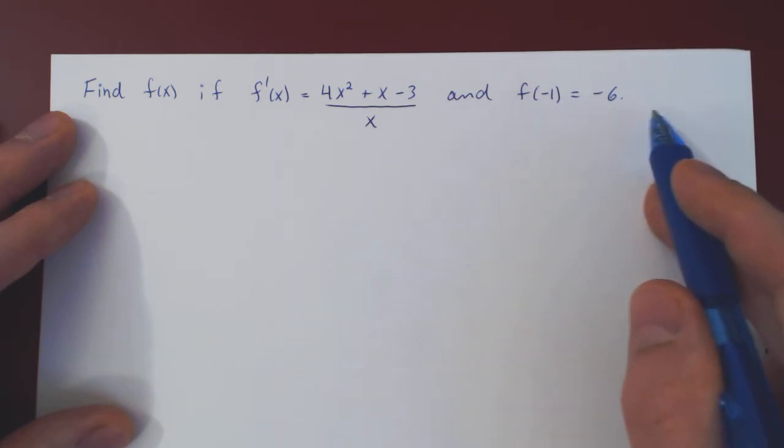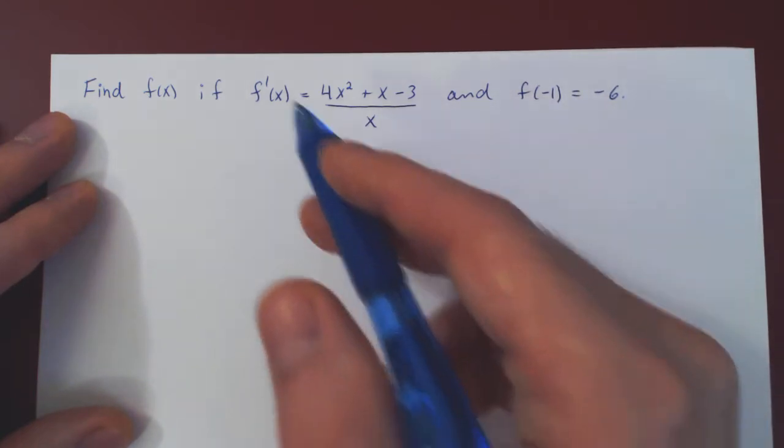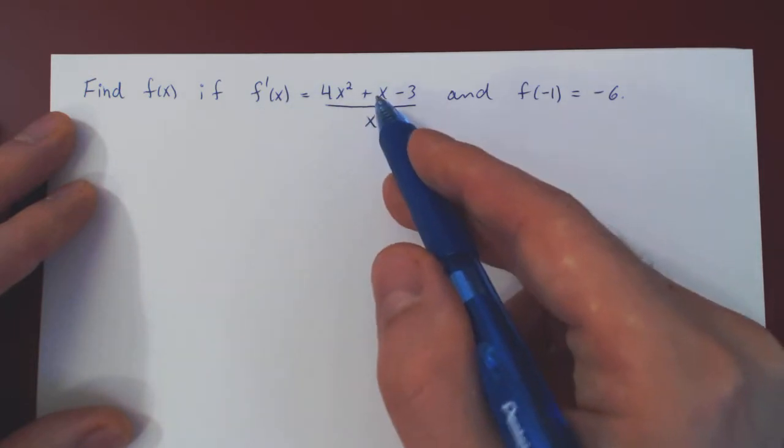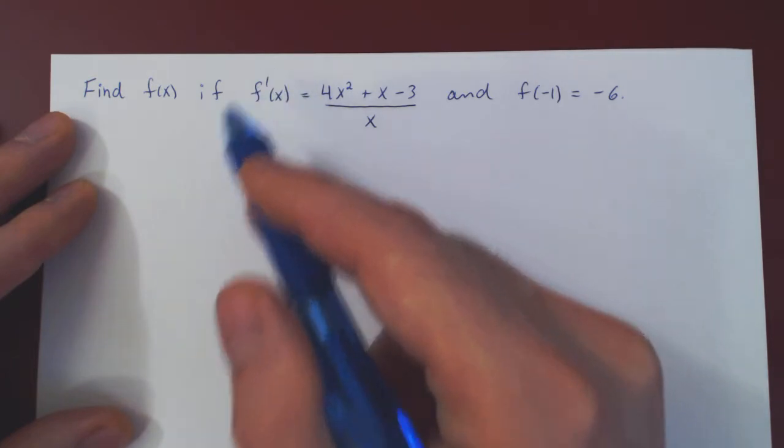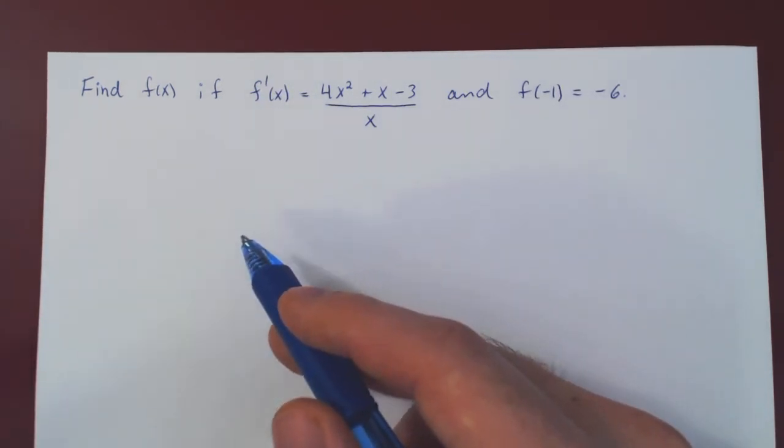This is usually called an initial condition. So knowing the derivative of the function, how can we go back to the function itself? Well, we have to undo the derivative, and of course the inverse of the derivative is integration.